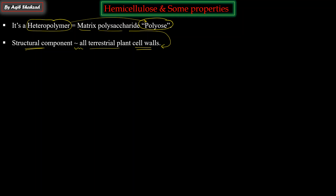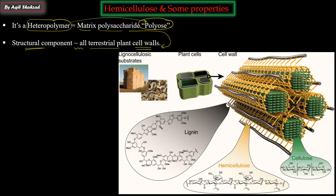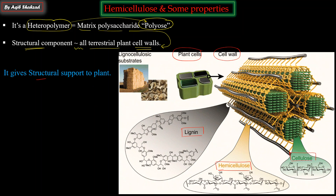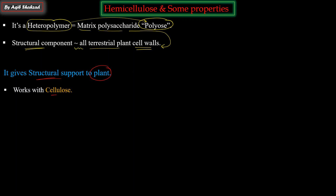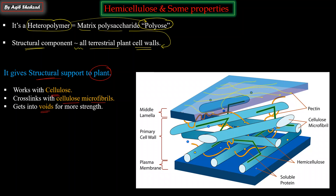In terrestrial plants, hemicellulose is a structural component of the cell wall matrix. Plant cells are joined together with a cell wall outside, which has different components like lignin, hemicellulose, cellulose, and many proteins - all making a composite. These give structural support to plants. Hemicellulose works by cross-linking with cellulose microfibrils, filling into the gaps between them, making the wall more stiff and strong.